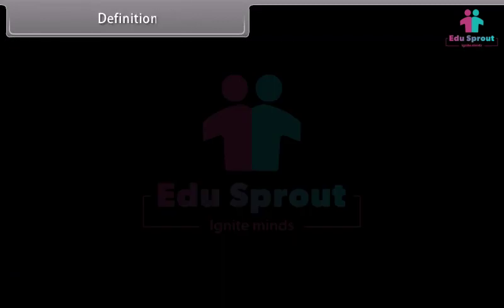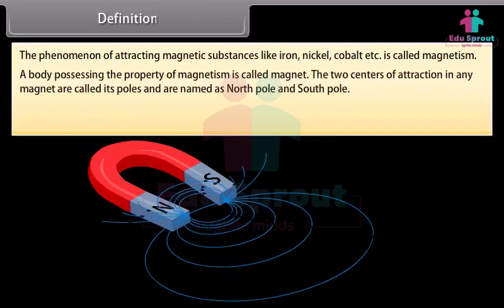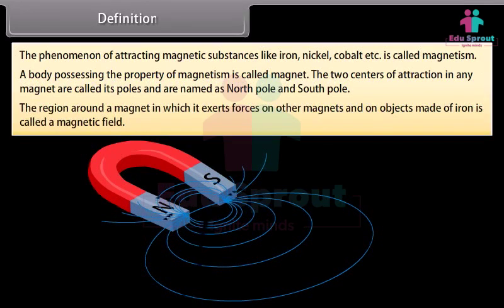Definition: The phenomenon of attracting magnetic substances like iron, nickel, cobalt, etc. is called magnetism. A body possessing the property of magnetism is called a magnet. The two centers of attraction in any magnet are called its poles, and are named as north pole and south pole. The region around a magnet in which it exerts forces on other magnets and on objects made of iron is called a magnetic field.